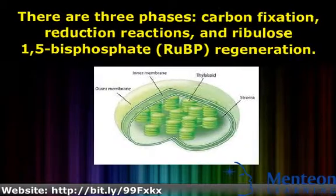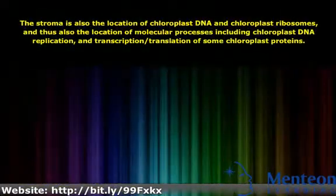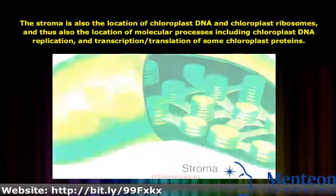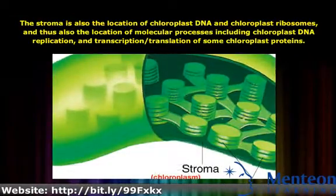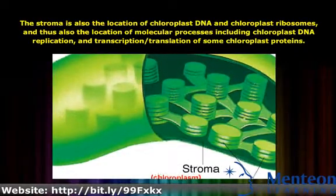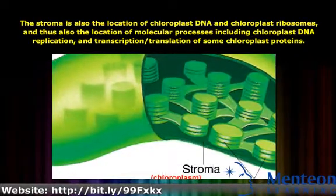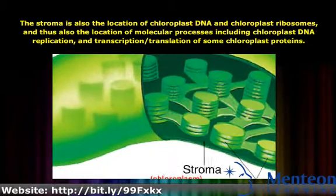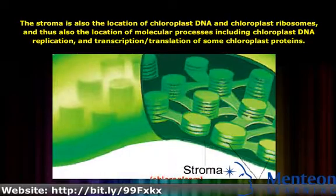The stroma is also the location of chloroplast DNA and chloroplast ribosomes, and thus also the location of molecular processes including chloroplast DNA replication, and transcription and translation of some chloroplast proteins.